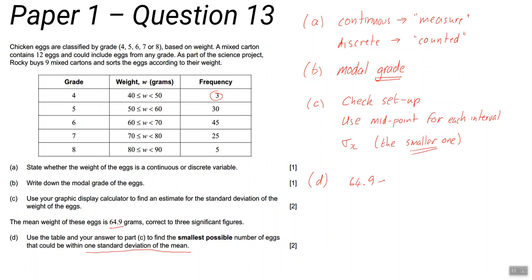So you need to work out what 64.9 minus Sigma is - and you've just worked that out in C - and 64.9 plus Sigma. That's what gives you the interval that you're looking to find your values in. You want your weight in that range.